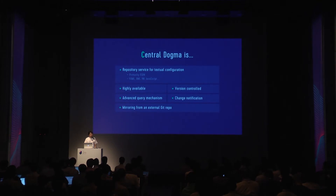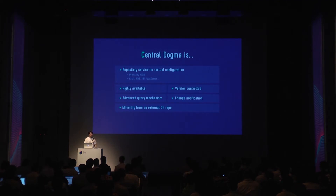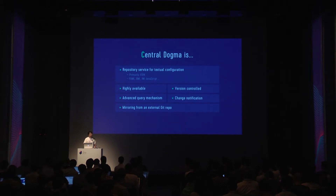Because applications depend on Central Dogma, we made it highly available to address this issue. Also, any configuration change can affect an application's behavior dramatically — like causing regressions or catastrophic failures — even if you did not change any lines of your code. Because of that, Central Dogma is version controlled so that we know who made what changes and when exactly.